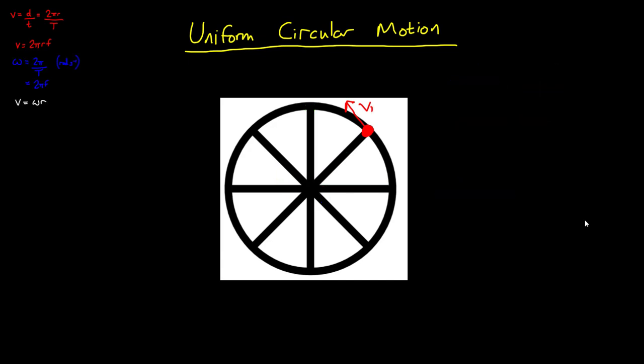Newton's first law says that an object will continue moving at a constant velocity unless an external force acts on it. Is an object in uniform circular motion travelling at a constant velocity? Well, it is travelling at a constant speed, but it is always changing direction, so it has a changing velocity. If we have a changing velocity, what must be happening? An acceleration.